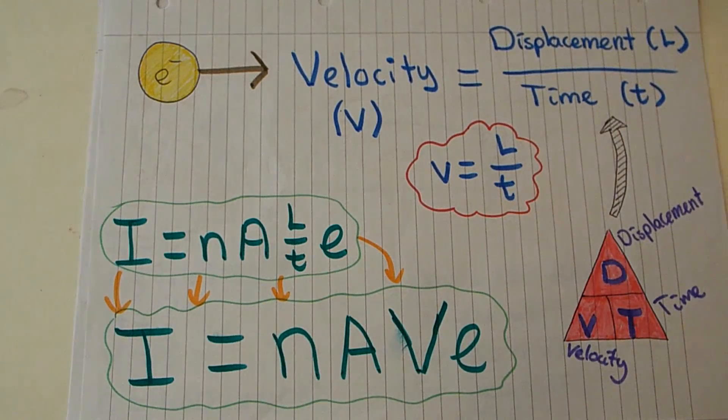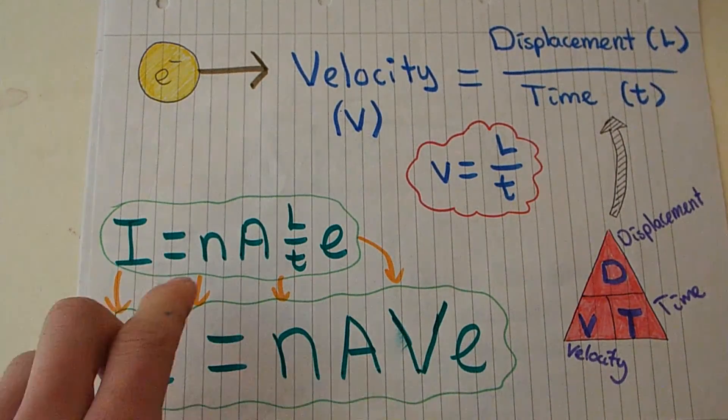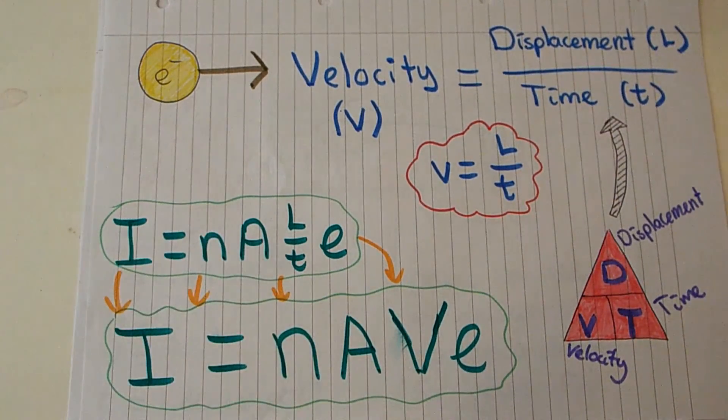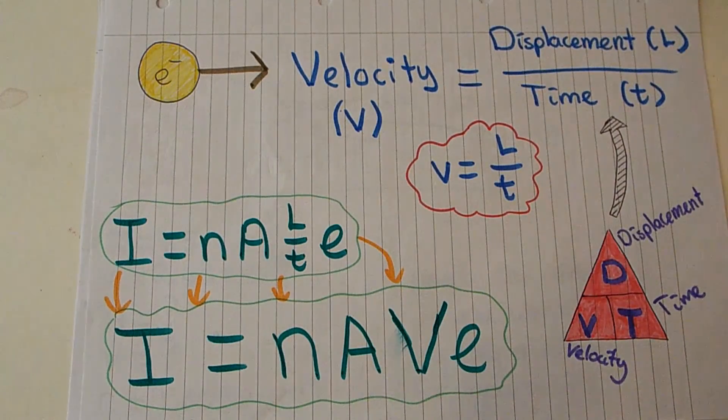So we change our I equals nAeL over t to just I equals nAe times L over t, which is identical. This gives us what we want: I equals nAve.